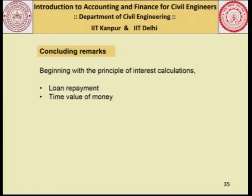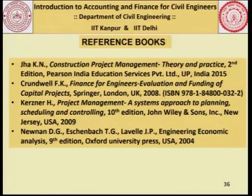With this we come to the close of our discussion today. We started with the principle of interest calculations, talked about loan repayment, the idea of time value of money, and some relevant ready reckoners available in tabular form which enable quick answers. You should be very careful about the assumptions these ready reckoners and spreadsheet calculations make — particularly regarding uniformity — as those assumptions are what make the calculations more or less complex. Here is a list of references which you may like to use to enhance your understanding. Thank you.